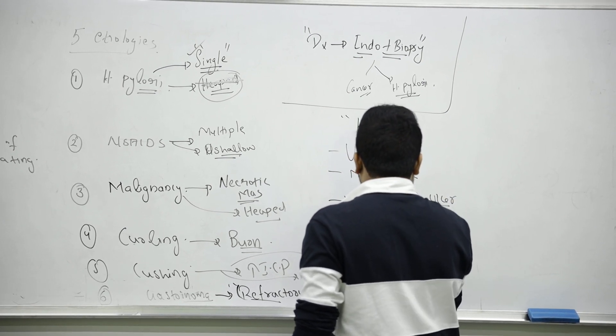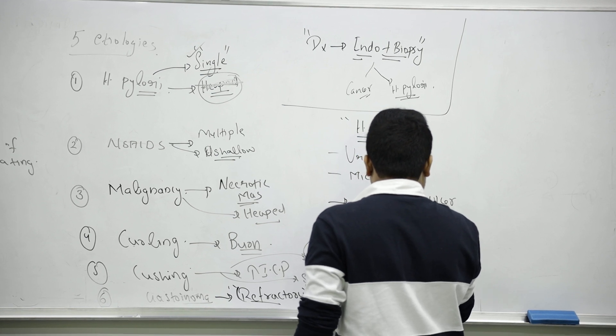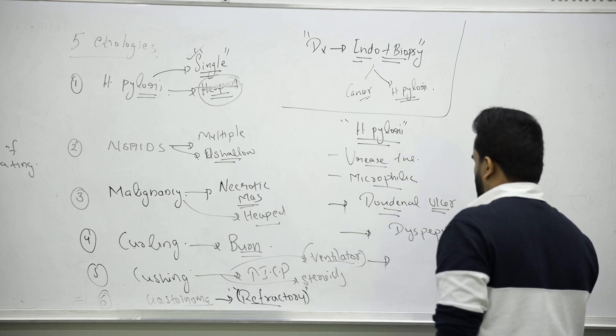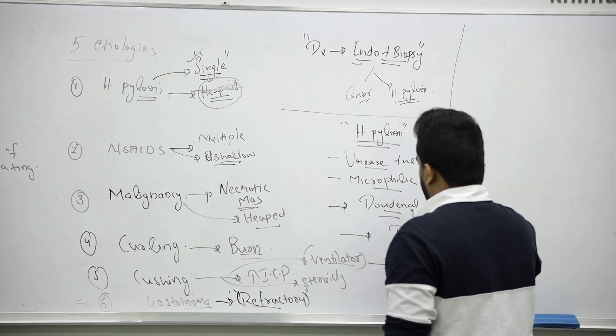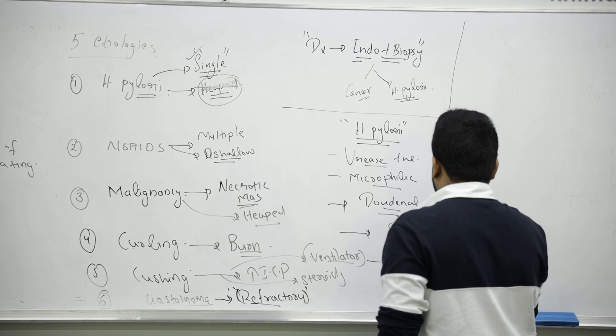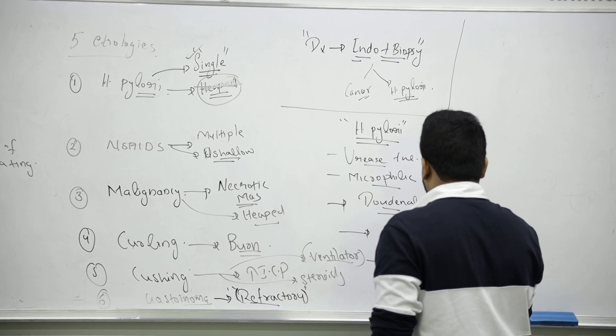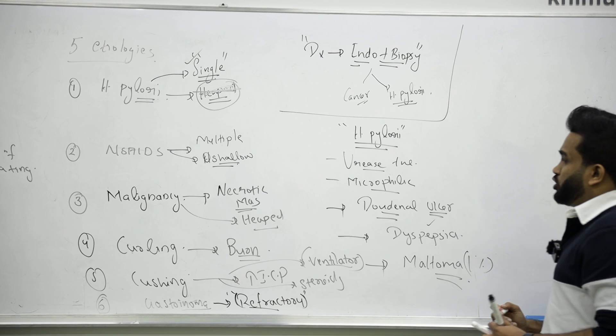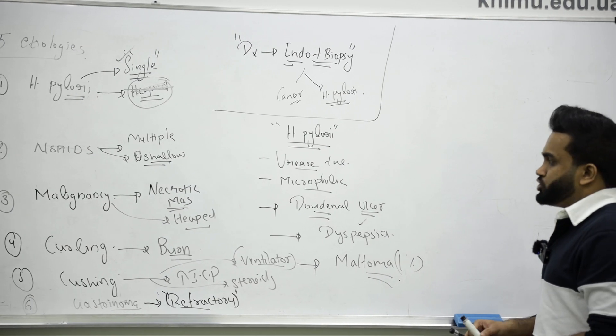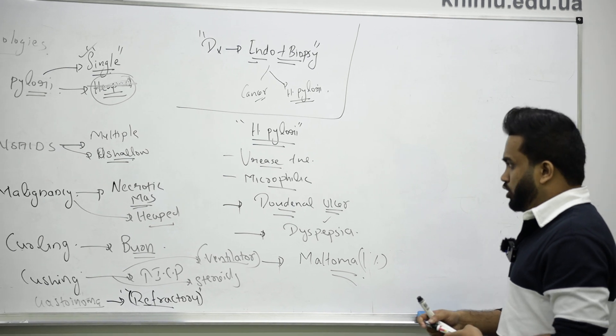Patients will have dyspepsia, signs of indigestion. Sometimes they will cause a cancer of stomach, we call it as MALT lymphoma. In around one percent of people, they can have MALT lymphoma caused by lymph node cancer of stomach, caused by Helicobacter pylori.